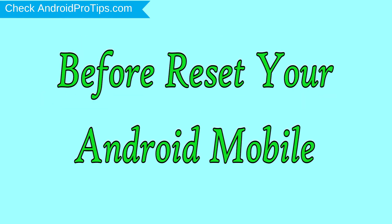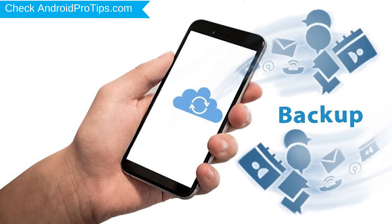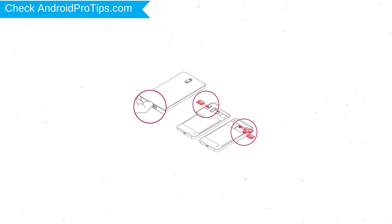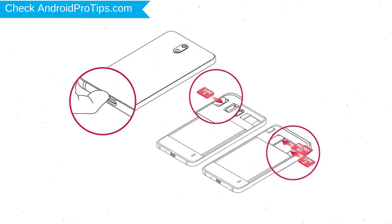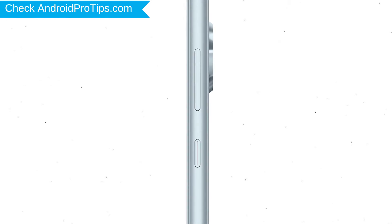Before resetting your mobile, charge your mobile if the battery is less than 50%. You need to make sure that the data on your device is backed up so you do not lose valuable photos or documents. Reset deletes all your mobile data, so you should back up all important data and remove your SIM and SD card.